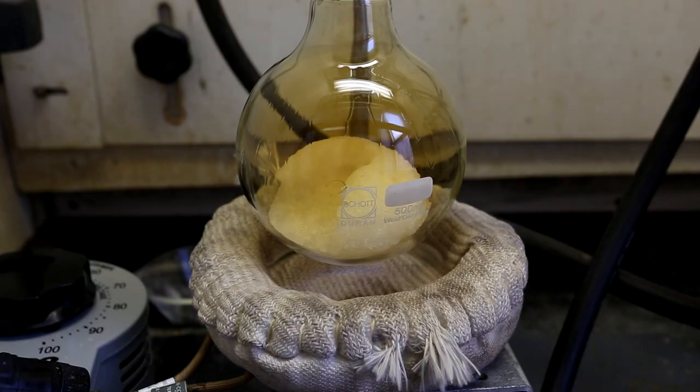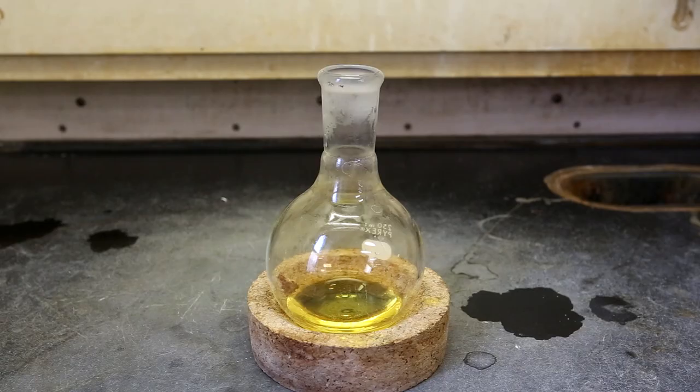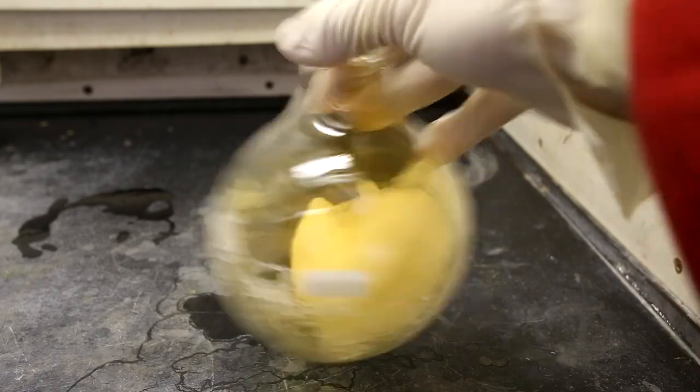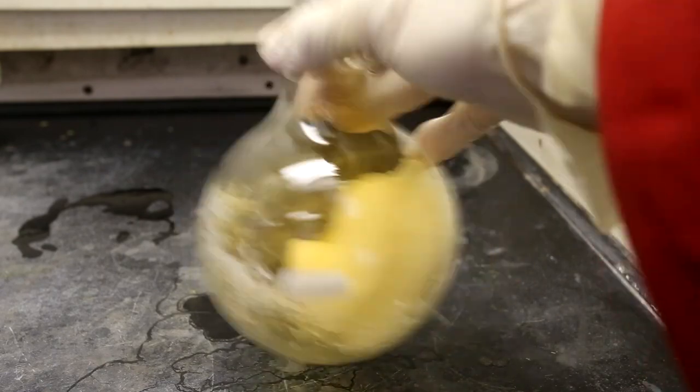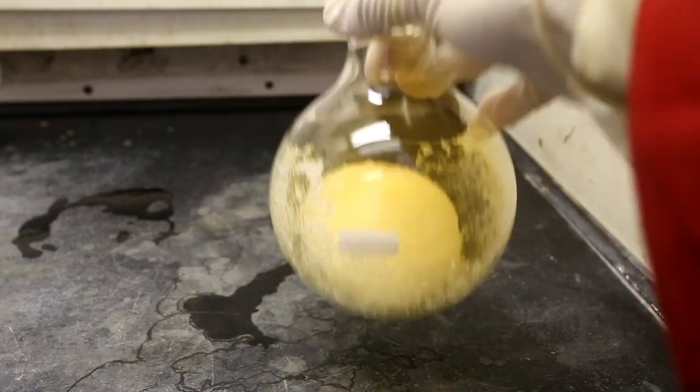At this point, you should remove the flask from heat and let it cool to room temperature before disposing of it. The final product is about 30 milliliters of highly concentrated yellow nitric acid. In the distillation flask, you are left with a big clump of hard sulfate salt.